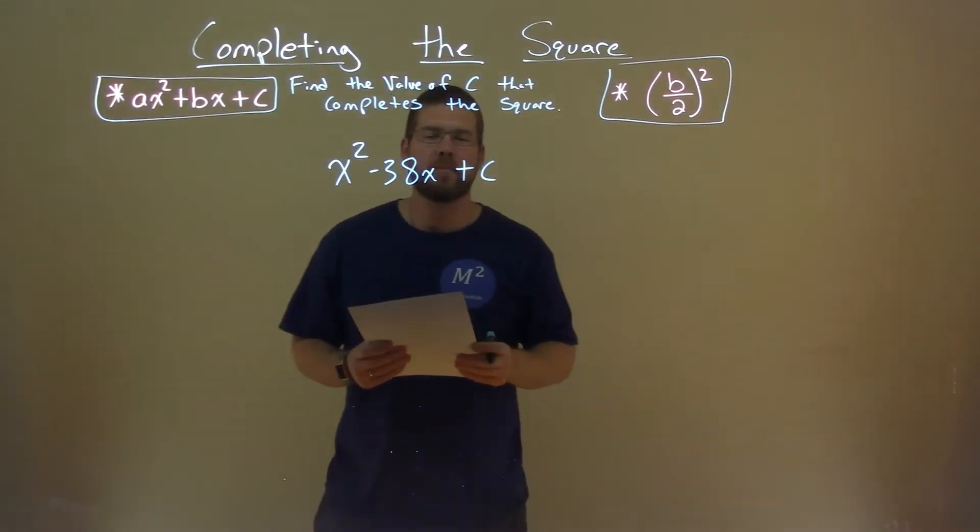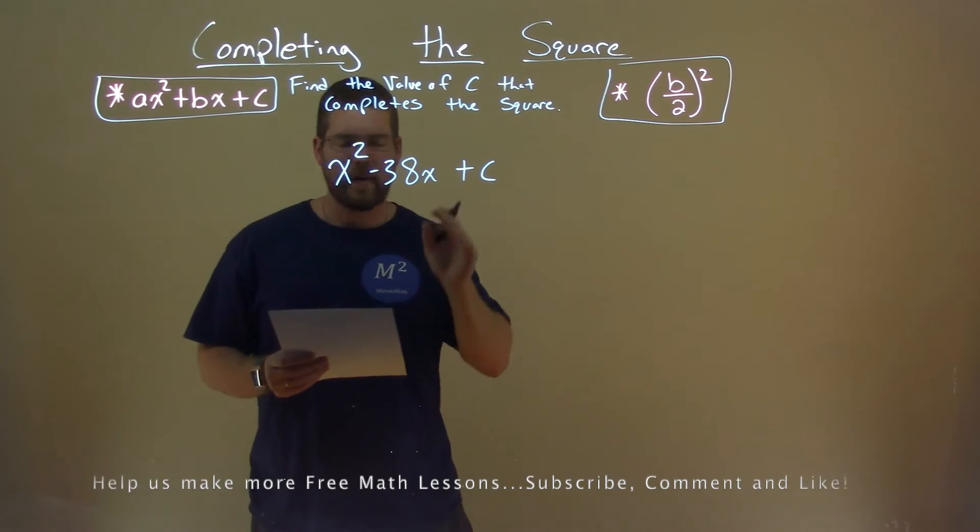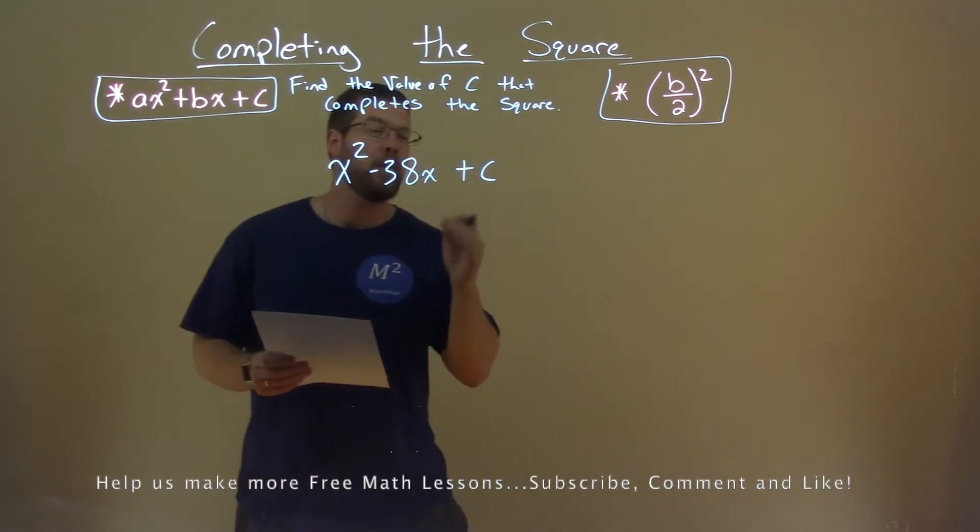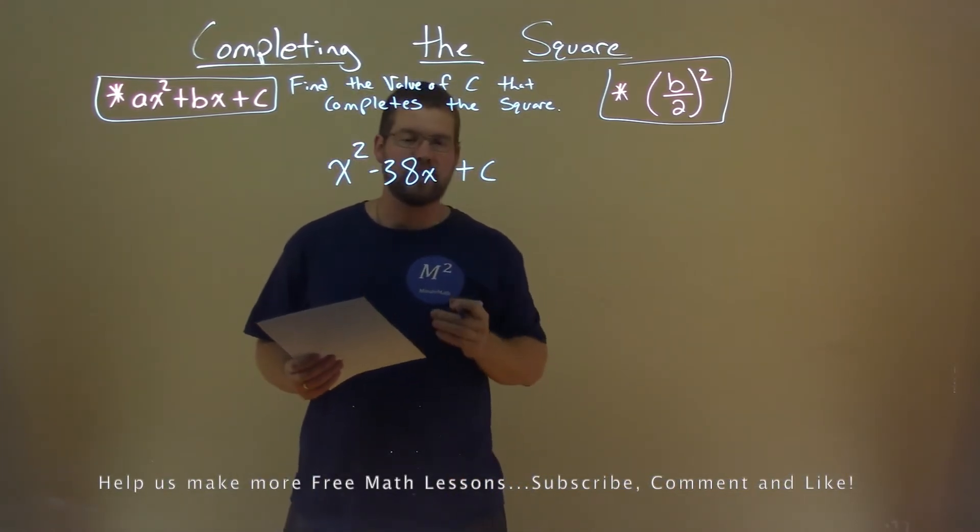We're given this problem right here: x squared minus 38x plus c, and we want to find the value of c that completes the square.